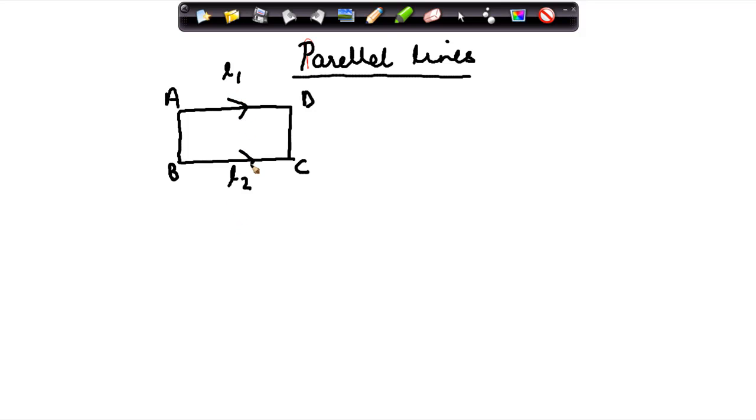Now what do we see in this case? You have a line AD and you have a line BC. If you see these two lines, even if you were to extend them, they would keep going like this. These two lines will never meet.